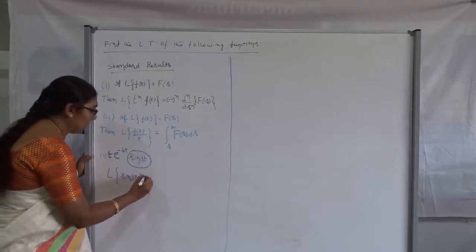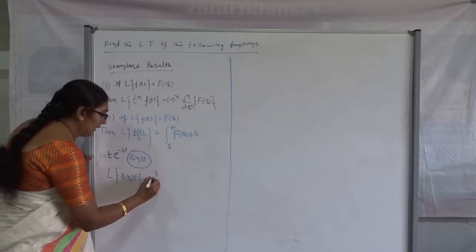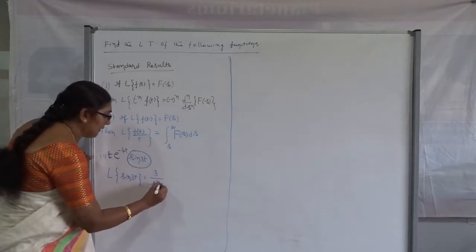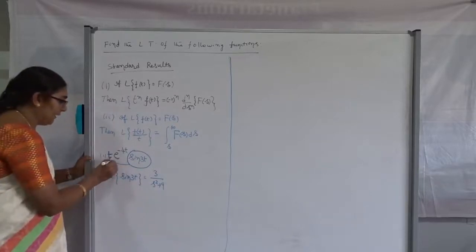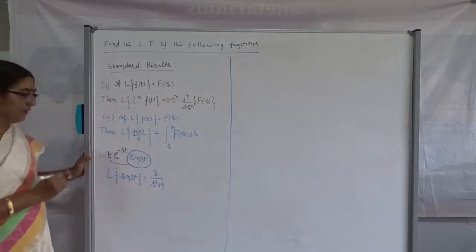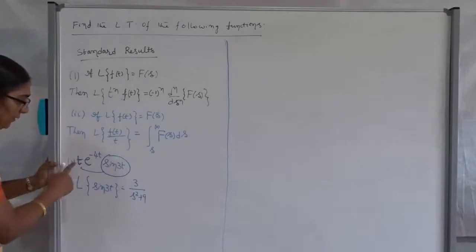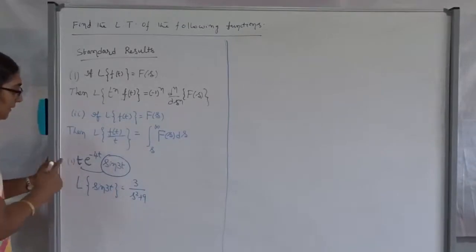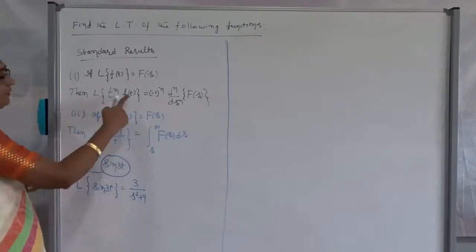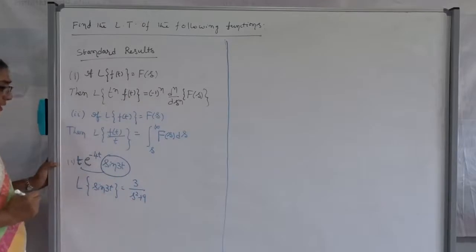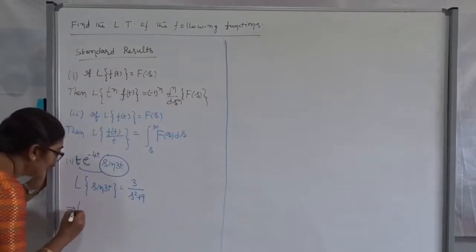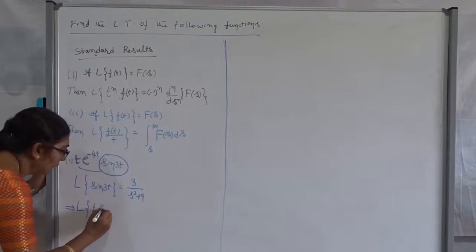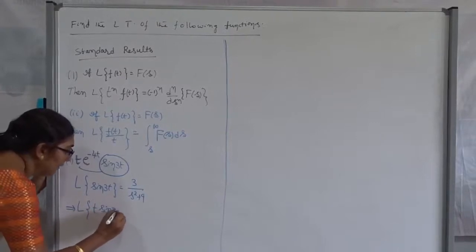The Laplace Transform of sine 3t is nothing but 3 divided by s-squared plus 3-squared, which is s-squared plus 9. After that, we take it along with the t. Don't think of the shifting property yet — first take it along with t, because to handle the t factor we need to differentiate. So, the Laplace Transform of t times sine 3t is what we now compute.